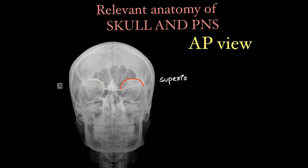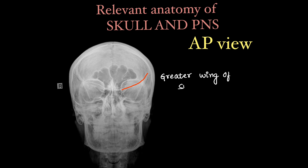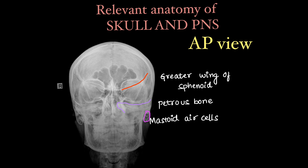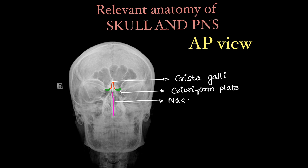We have some additional structures which are visualized on AP view of x-ray: the superior orbital ridge, the inferior orbital ridge. Next, through the orbit we can see the greater wing of sphenoid on both sides, the petrous bone, the mastoid air cells, crista galli — part of the ethmoid bone — the cribriform plate, bony nasal septum, and the bony part of the inferior turbinate.